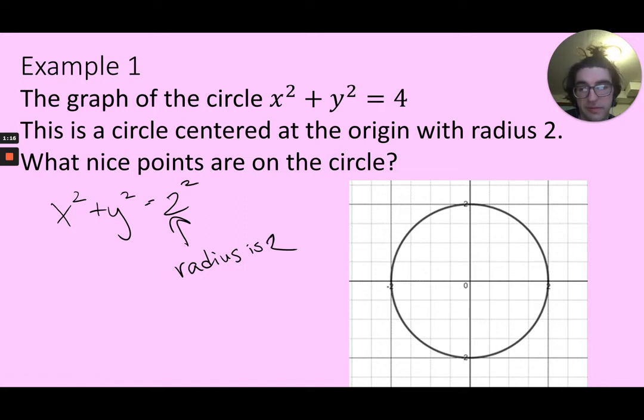Now why is it 2 instead of 4? Well, if I look centered at 0, 0, the nice points here are at like 2, 0, negative 2, 0,